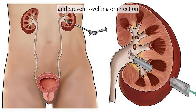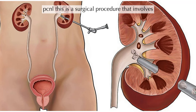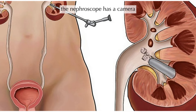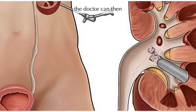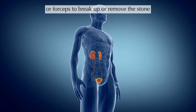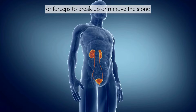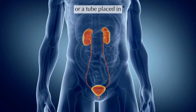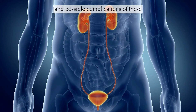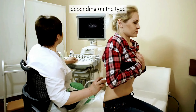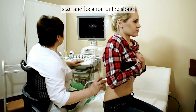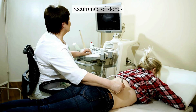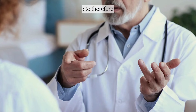Percutaneous nephrolithotomy (PCNL) is a surgical procedure that involves making a small incision in your back and inserting a tube called a nephroscope through your skin into your kidney. The doctor can then use a laser, an ultrasonic probe, or forceps to break up or remove the stone. You will be given general anesthesia during this procedure, and a stent or drainage tube may be placed afterward. The recovery time and possible complications of these procedures vary, and common complications include bleeding, infection, injury to the kidney or ureter, and recurrence of stones. It is important to follow your doctor's instructions and advice after treatment.